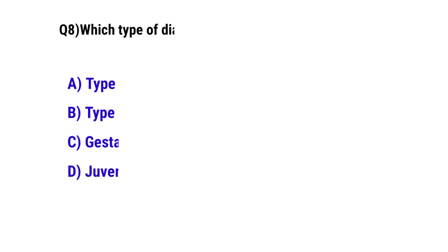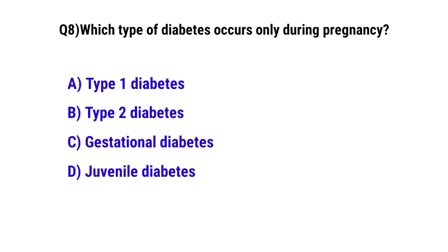Question number 8. Which type of diabetes occurs only during pregnancy? The correct option is C: Gestational diabetes.